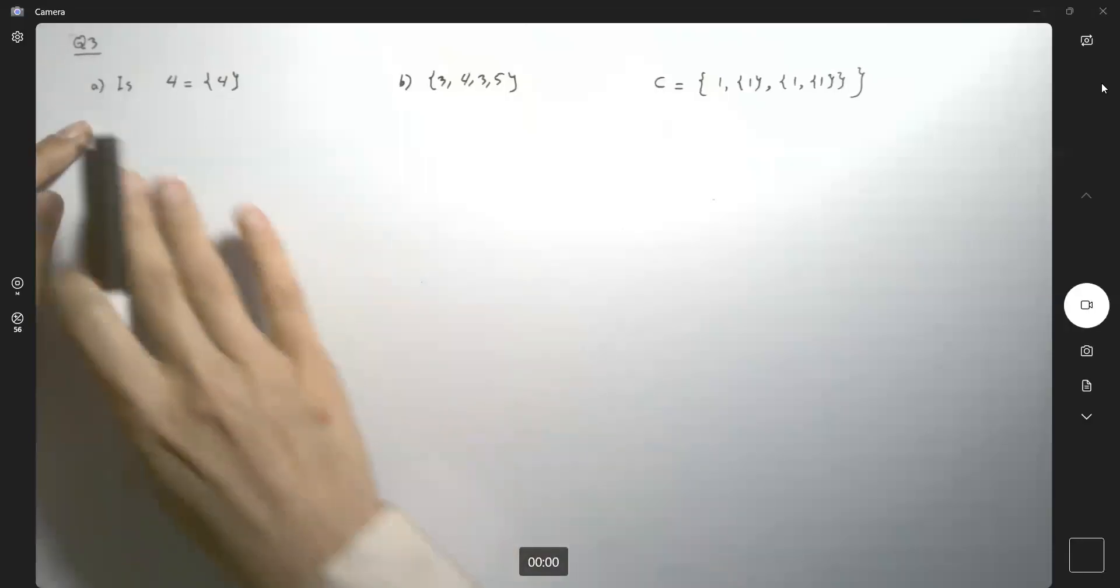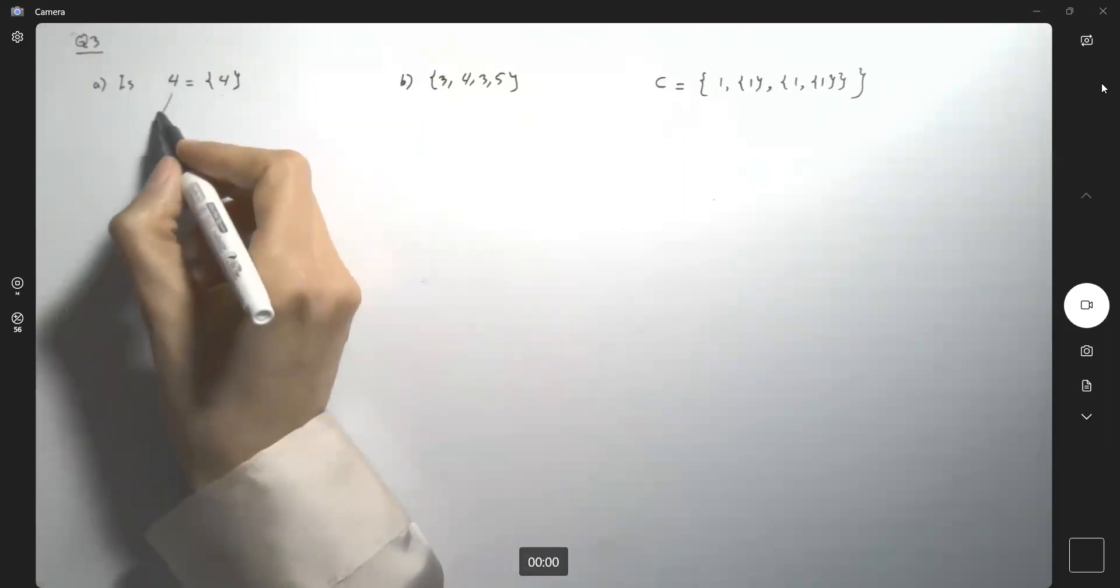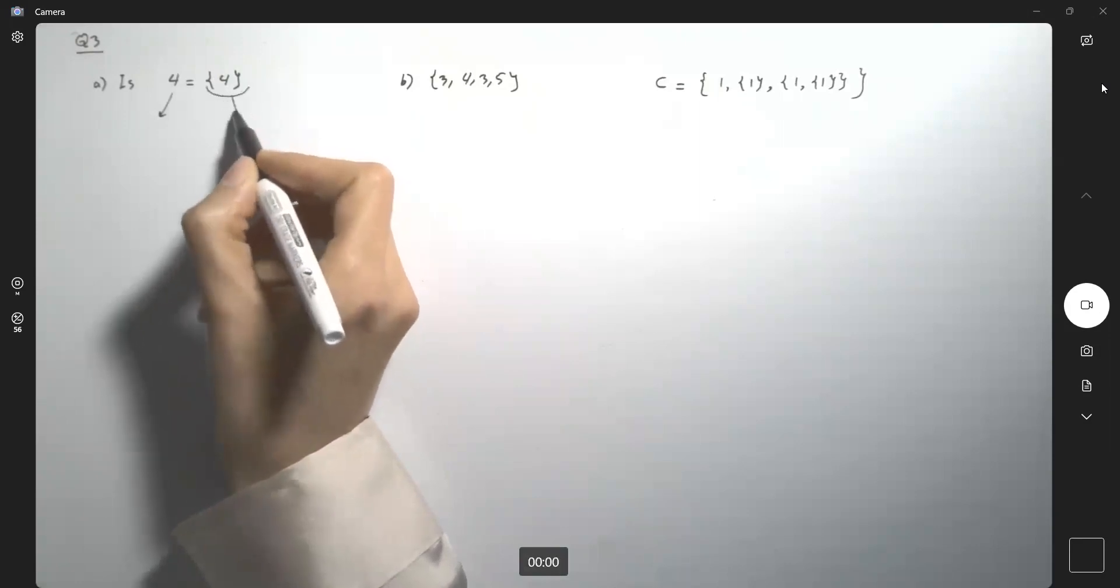Question 3 has three parts. Part A says, is number 4 equals to set, including 4?